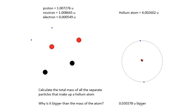An atomic mass unit: a carbon-12 atom has a mass of 12 atomic mass units — that's the definition of that. It's about 1.67 × 10⁻²⁷ kilograms. The important point here is that the bits have a bigger mass than the atom.